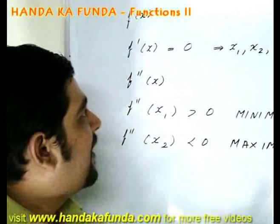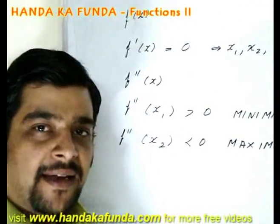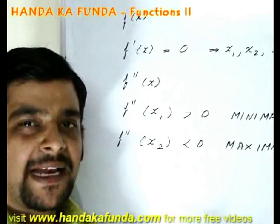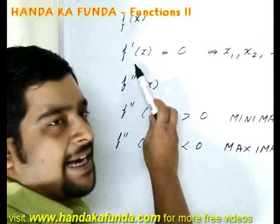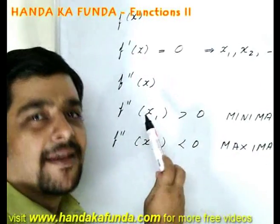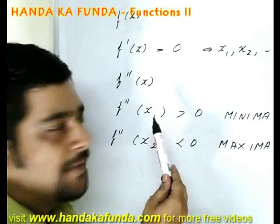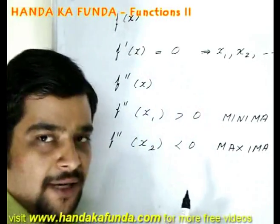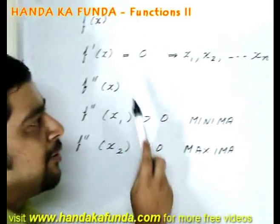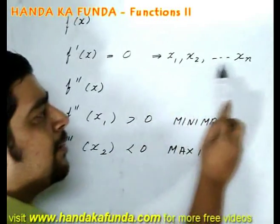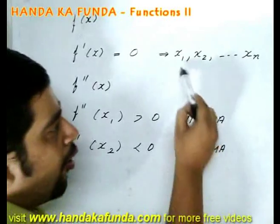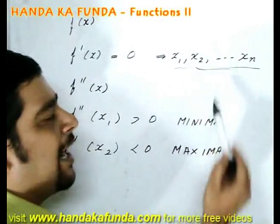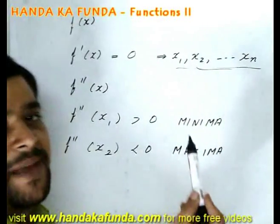Suppose I am given a function f(x), then I am trying to find out its maxima and minima. How will I do that? First of all I will differentiate it and obtain the value of f dash x, that is the first differential of the function. I will equate it to 0. Once I equate it to 0, I will write down all the roots of the equation which may be 1, may be 2, or may be n. All these points are the points at which a maxima or a minima occurs.